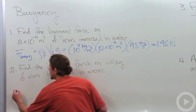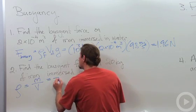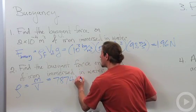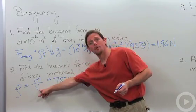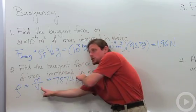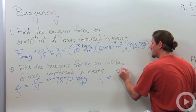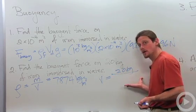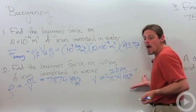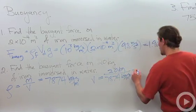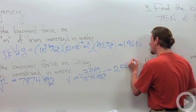The density of iron, which is mass divided by volume, is 7,874 kilograms per cubic meter. So I'll solve for the volume by swapping these two. Volume equals mass, 20 kilograms, divided by density, 7874 kilograms per cubic meter. When you work out that value, you'll get 2.54 times 10 to the minus 3 cubic meters.